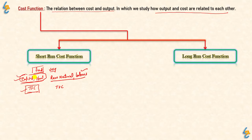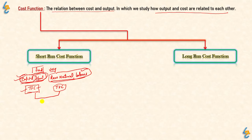Fixed cost does not depend on production. Even if you don't produce anything, fixed cost remains — because you still have the plant, capital, and machinery. Variable cost varies: if we produce more, we increase the variable cost. As production increases, total variable cost increases. This was the short run.